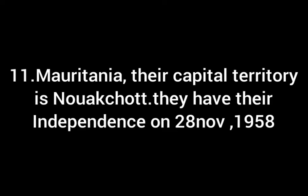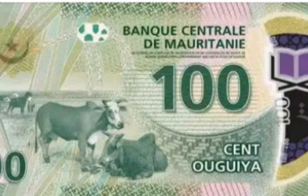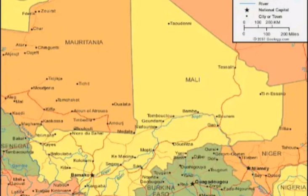Number 11, Mauritania. Their capital territory is Nouakchott. Their president is Mohamed Ould Ghazouani. They gained their independence on 28th November, 1958. This is their currency, flag, and map.